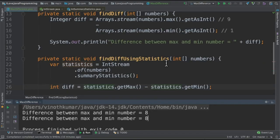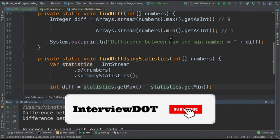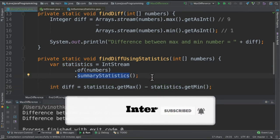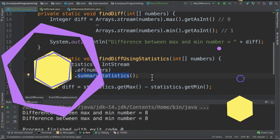It's a very small program. What did I learn? Stream.max and min API and summary statistics API. Please try it out. Hope this video is useful. Thank you.